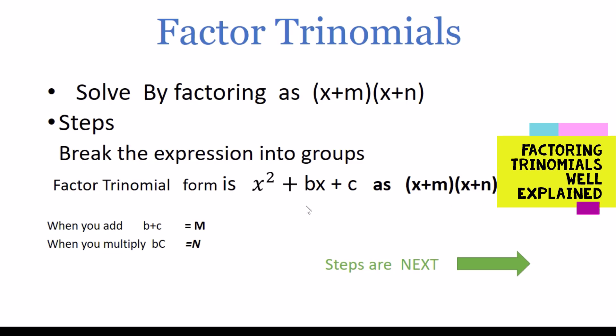So the way it works to factor this problem, we multiply x to itself after we break it down in this way and that's how we get to the x squared. When we combine two numbers we get m here and when we multiply b to c or two numbers we get n.